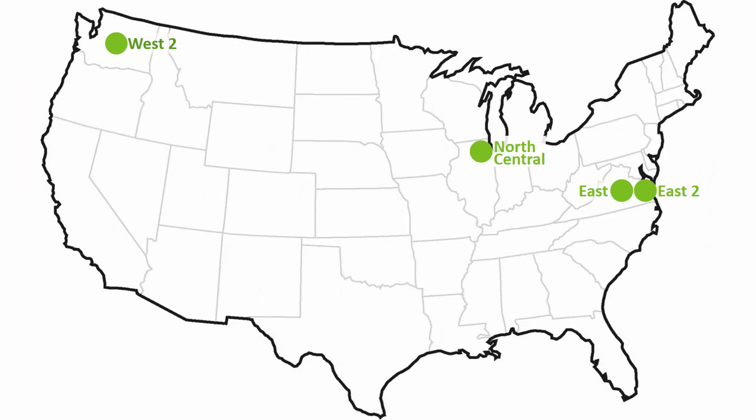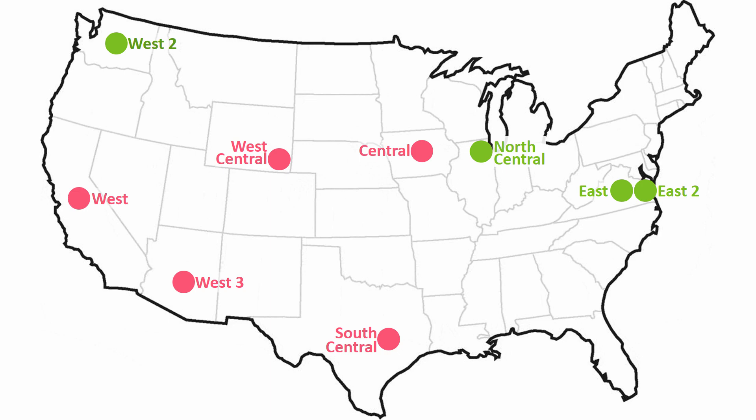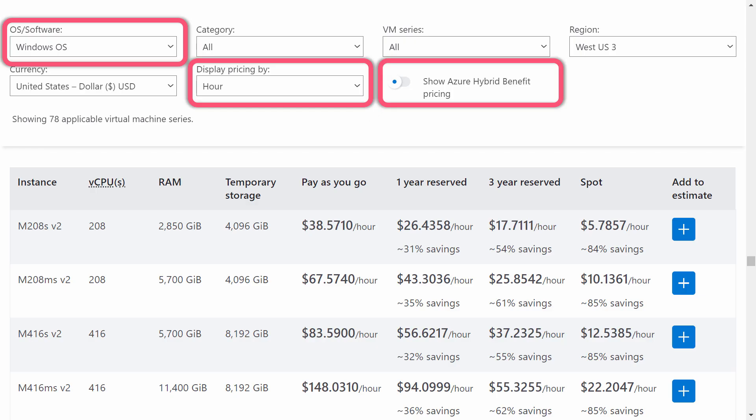Here's a map of the regions that will usually have lower Linux VM prices: the two East regions in Virginia, the North Central region near Chicago, and the West 2 region near Microsoft headquarters in Washington. And here are the five regions that are likely to be more expensive for Linux VMs.